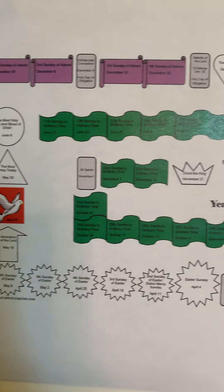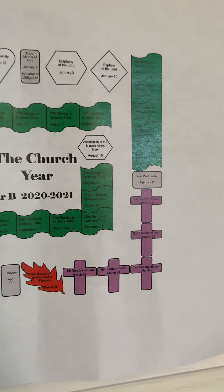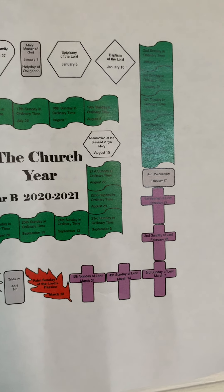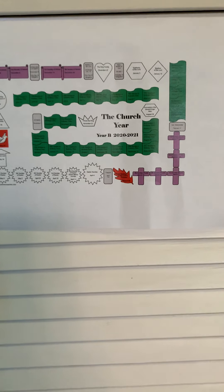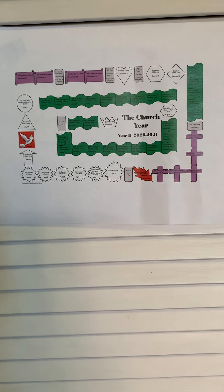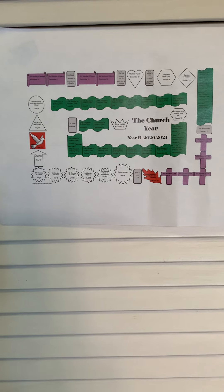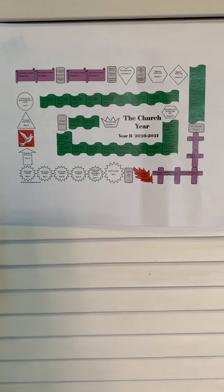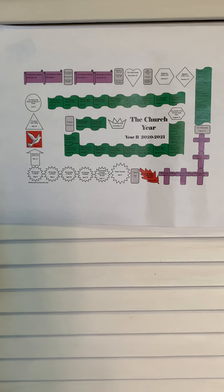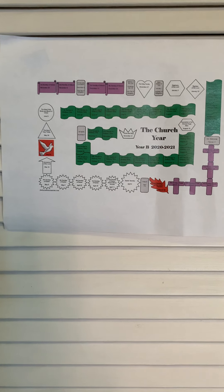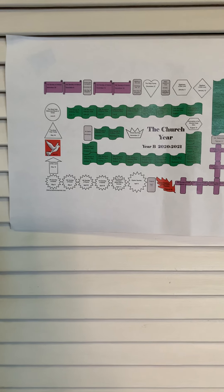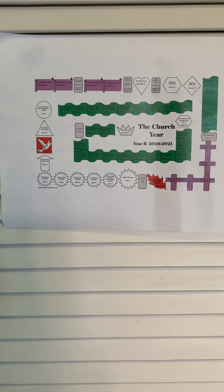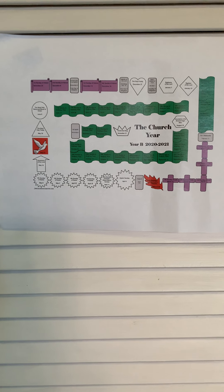Father Steve doesn't just decide what color to wear — he has to wear the color of the day depending on the church season. That's a map of the whole liturgical season. Most of the Sundays are green. Green is the most popular color; it's the color of ordinary time, which is what we're in right now. It's a time when we're not celebrating a feast or preparing for a feast. The two biggest feasts in the church are Christmas and Easter, and Christmas is the one coming up next.